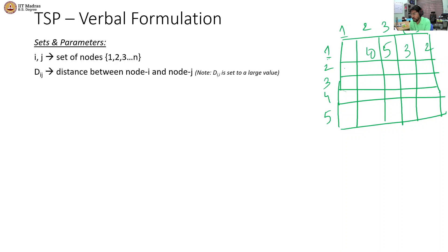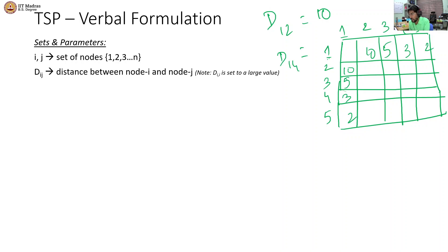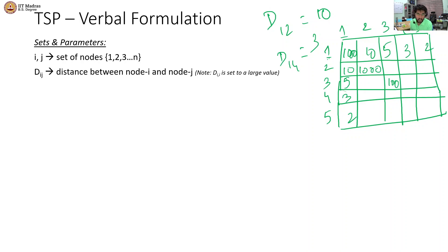Usually this is a symmetric matrix. An important thing to note: ideally, the diagonal elements — 1 to 1, 2 to 2, 3 to 3, 4 to 4, 5 to 5 — should be 0. But we usually give a very high number in these diagonal cells so that we avoid moving from i to i in our solution. That is the reason why we give a very high number in these diagonal values.